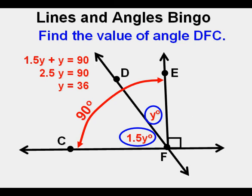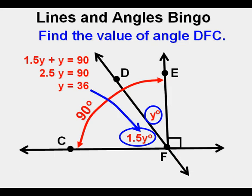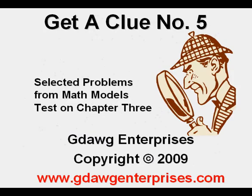Does that solve it? Is 36 our answer? I had a few students who did pick 36 as an answer, but that was wrong. No, 36 degrees would be angle DFE, but we need angle DFC, which is 1.5y. And 1.5 times 36 is 54. To check, we add y or 36 to 54, and since that's 90 degrees, we know that our answer is right. Angle DFC is 54 degrees in measure.